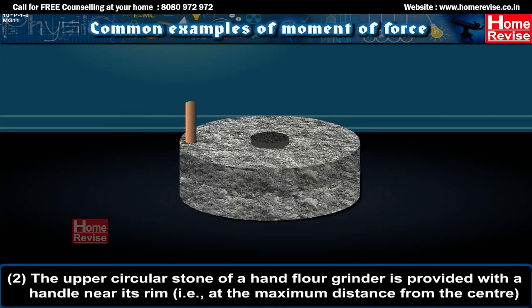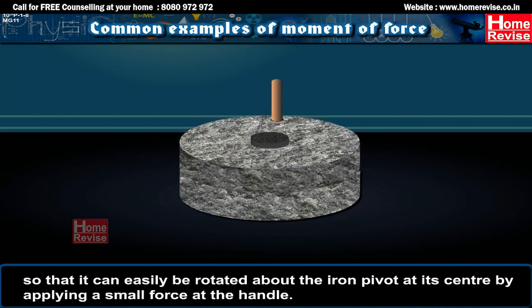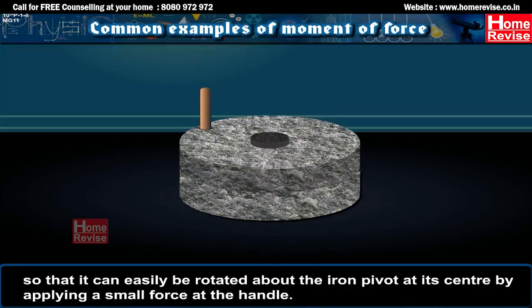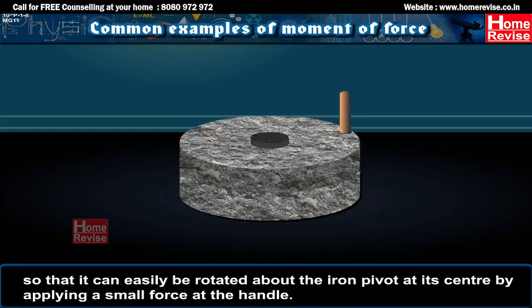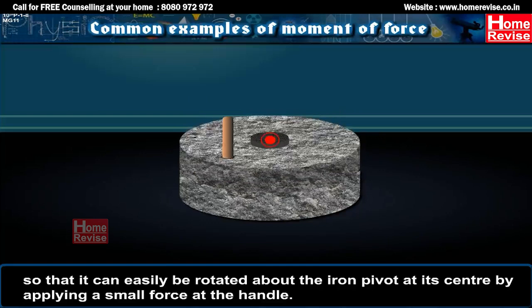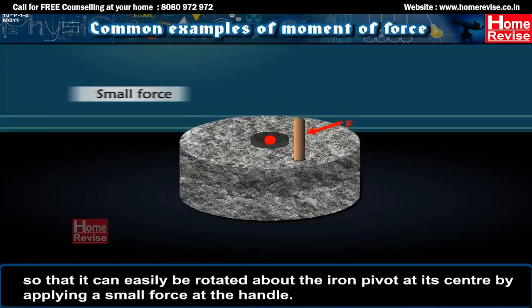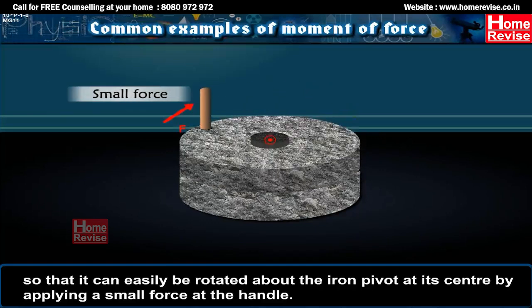2. The upper circular stone of a hand flour grinder is provided with a handle near its rim, that is, at the maximum distance from the centre, so that it can easily be rotated about the iron pivot at its centre by applying a small force at the handle.